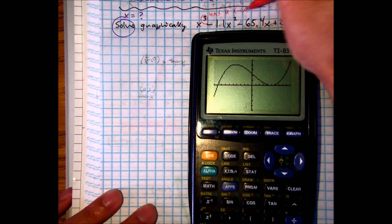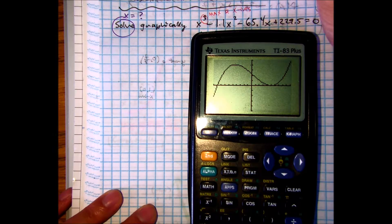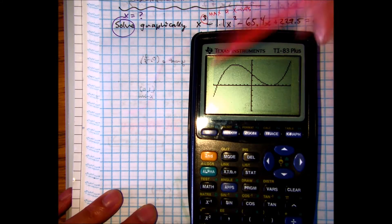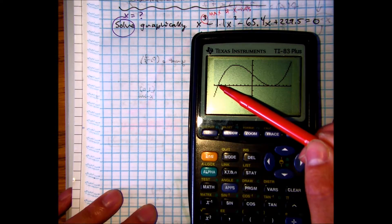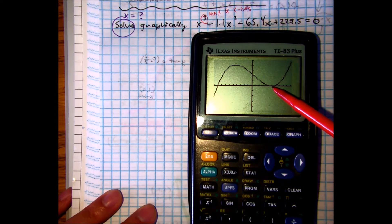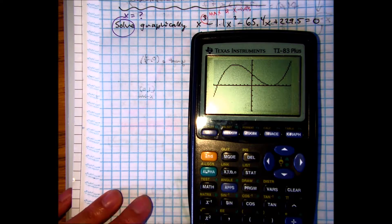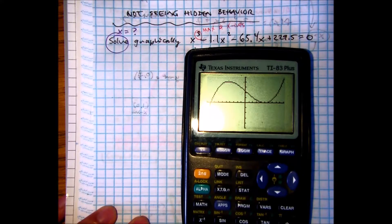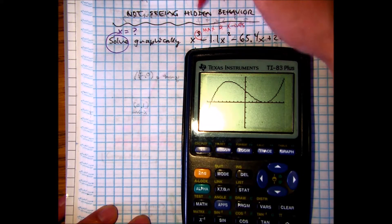It doesn't tell you the total, because sometimes we don't have 3, but we can count. Ready, set, go. We think it's 2, right? Remember, in today's lesson, this is called not seeing the hidden behavior.